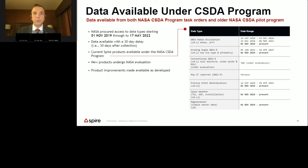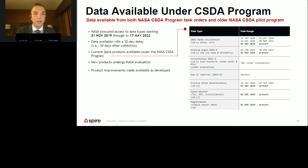So enough about Spire. Let's talk about what data is available under the CSDA program. I'm going to talk about the logistics of getting access and using that data after Matt concludes his portion of the brief. This is a list of all data that's available to you — you'll see our space weather, our precise orbit determination, and magnetometer data listed towards the bottom of this table. There are additional data types listed here that we're not going to cover today. If you have questions or want to trade ideas around how you can use this data that's available, my phone number and email address are listed on the title slide. NASA has invested in us, and we are invested in return in NASA, and in your successful use of the data we're making available under this program.